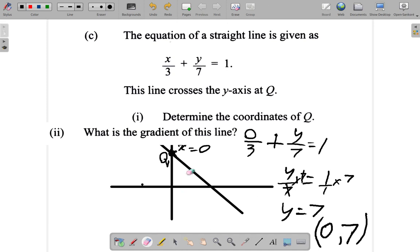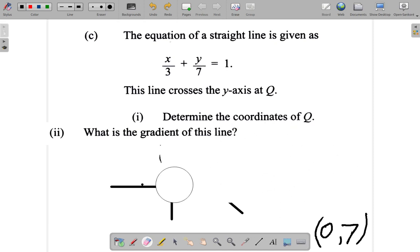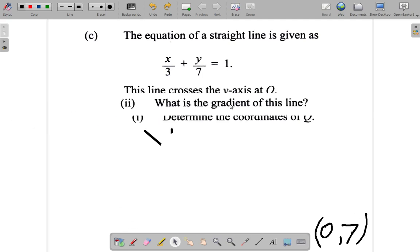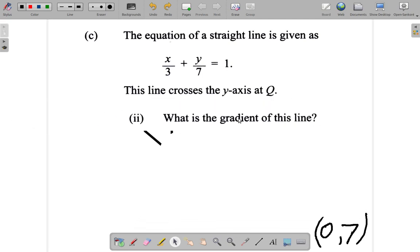Let me just erase some of these working to make space. The next thing the question asks for is, what is the gradient of this line? Looking at the gradient, we want to find out what is the gradient of this line. We already found the coordinates of Q. Let me put it here to make some space.